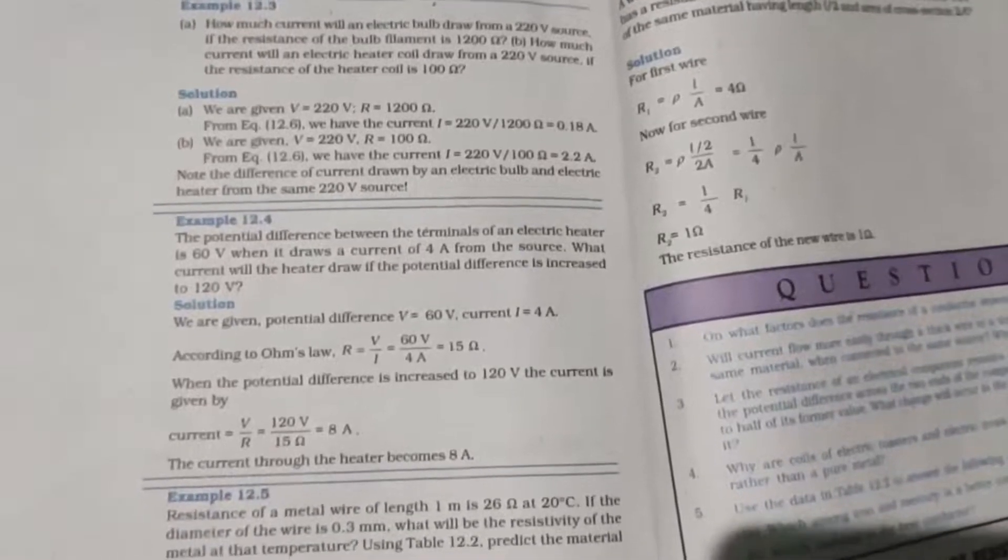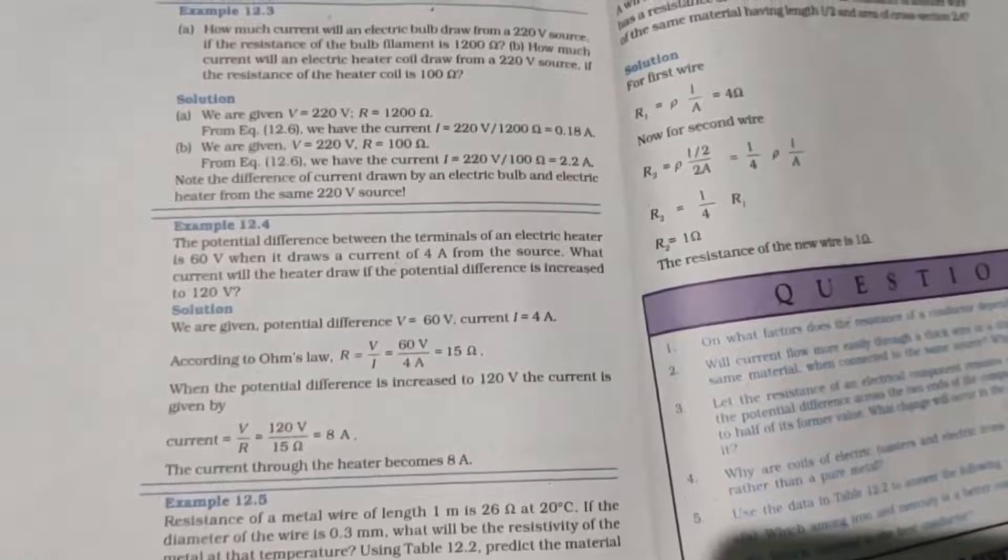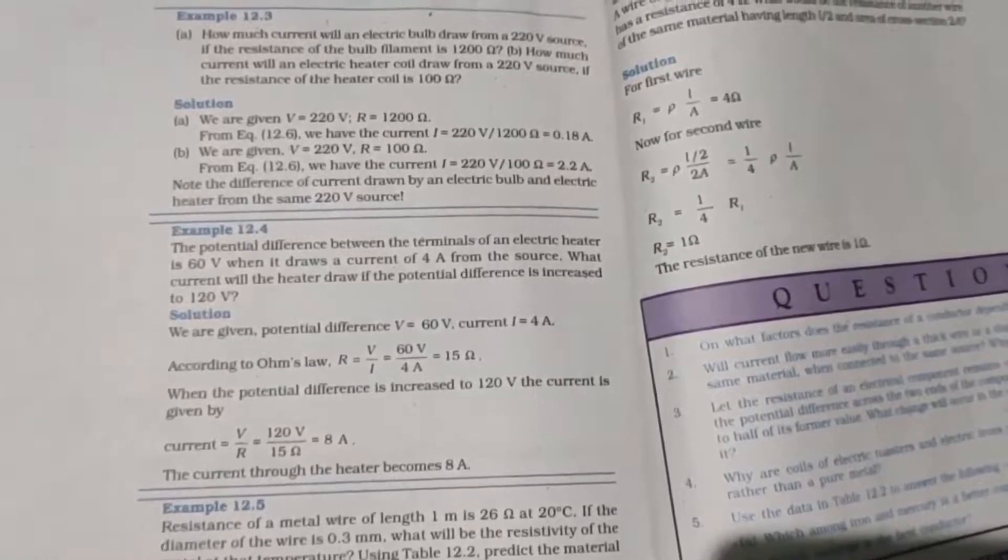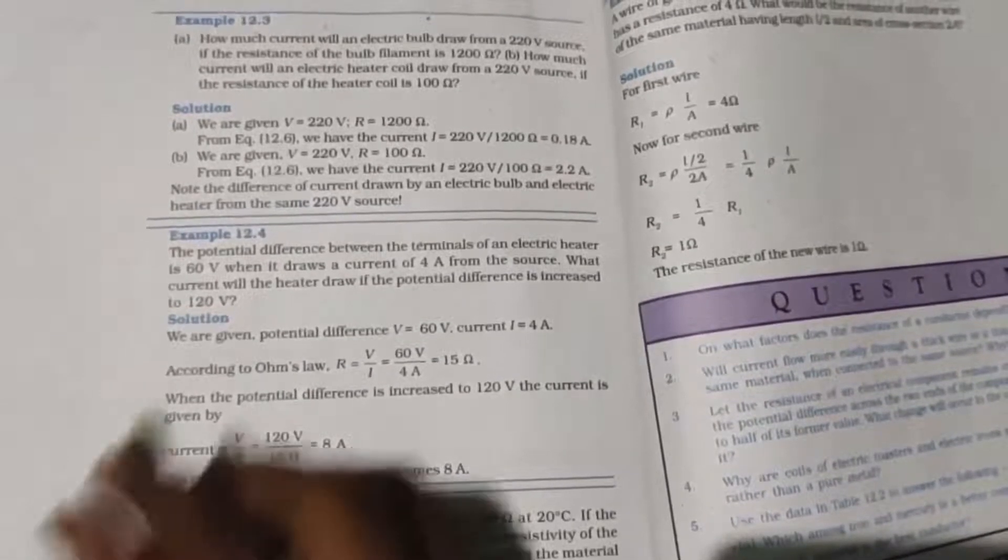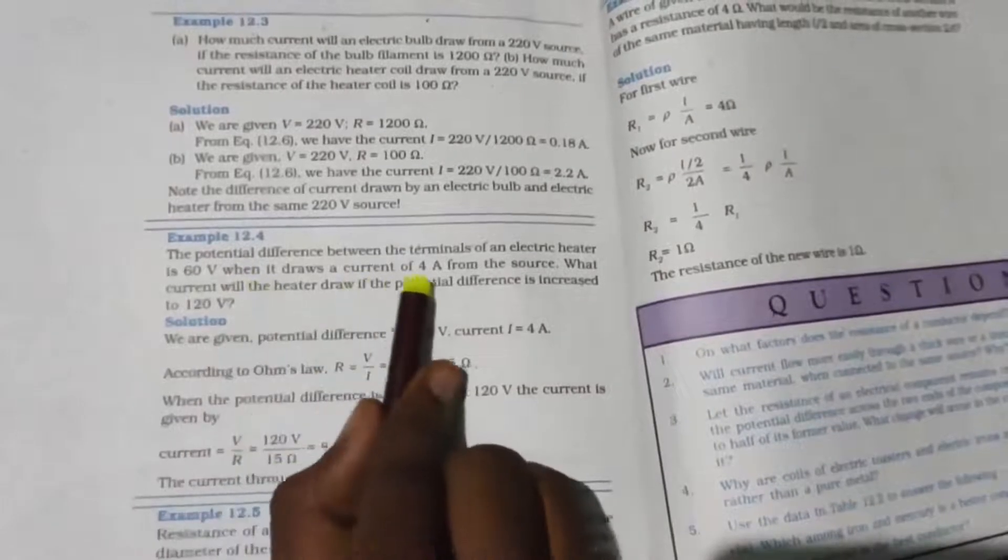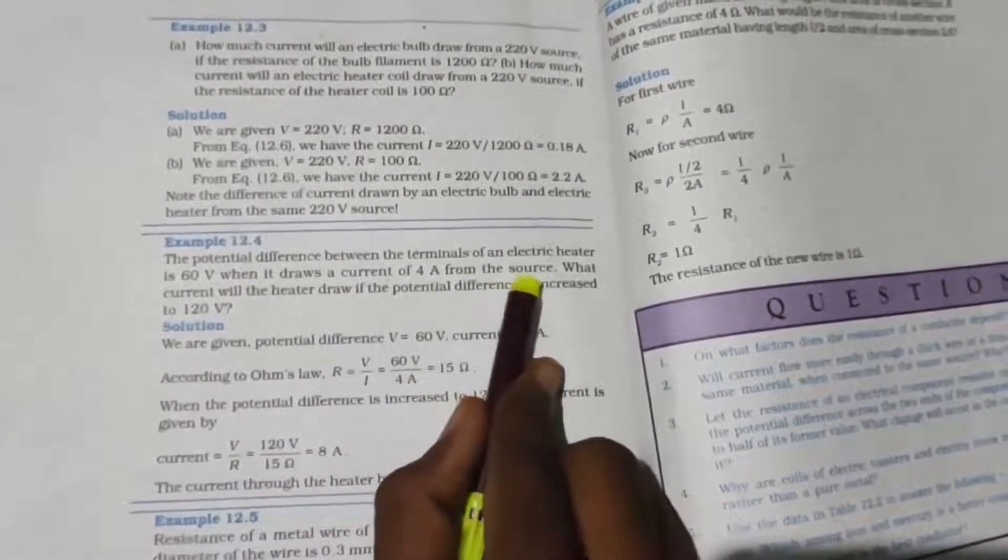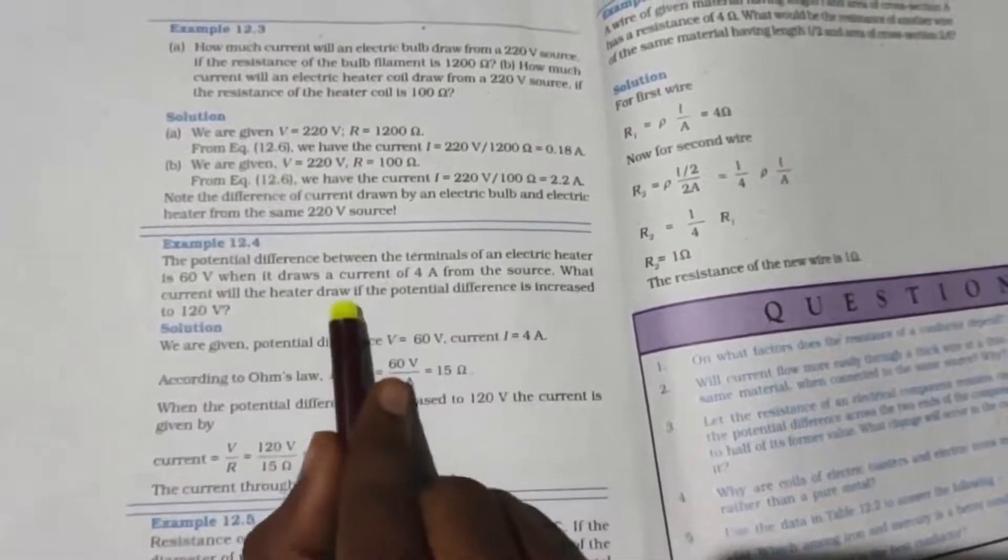Hello kids, welcome to Zipto Namma. Example 12.4: The potential difference between the terminals of an electric heater is 60 volts when it draws a current of 4 amperes from the source. What current will the heater draw if the potential difference is increased to 120 volts?